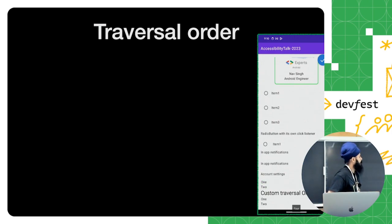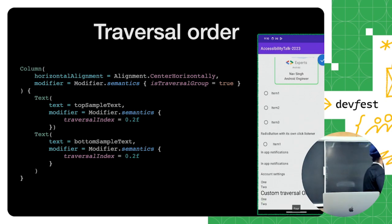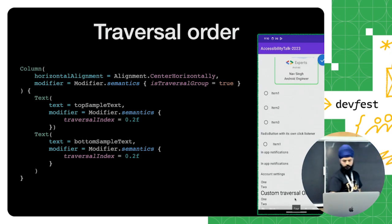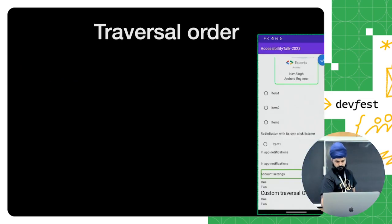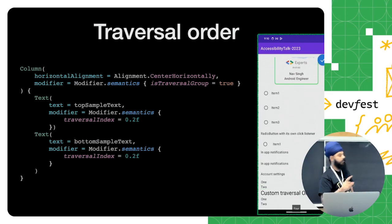Here's the example: I wrote a Column with `Modifier.semantics { traversalGroup = true }` on it, and set the traversal index on two components inside. Before setting the custom traversal order, it was processed as 1, 3, 2, 4. After setting the traversal order, it now processes as 1, 2, 3, 4 — in the correct sequential order.